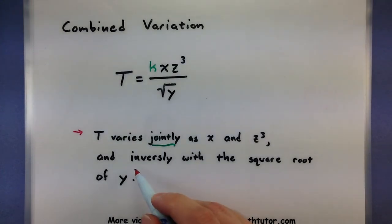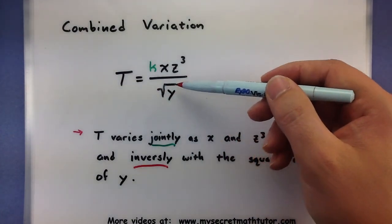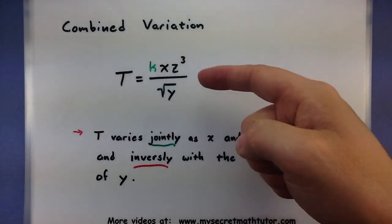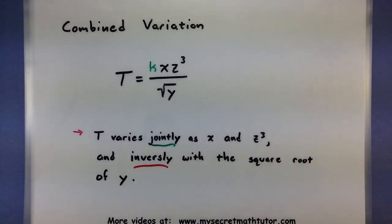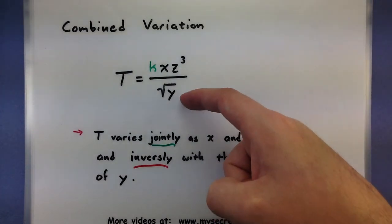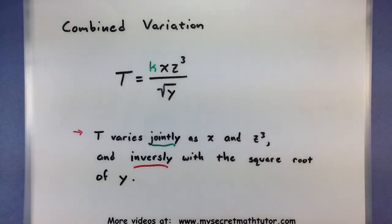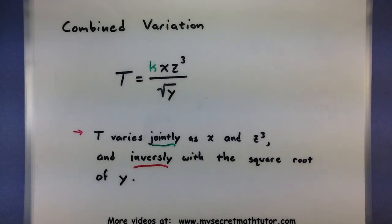Now it varies inversely with the square root of y. So inversely is putting that y underneath the square root all on the bottom. So when you see stuff like direct or joint, you know to put those variables on the top. If you see something like inverse, put those variables on the bottom. And as for that k, where should you put it with the combined variation? Well, just go ahead and just leave it on the top of all of them and it should be okay.